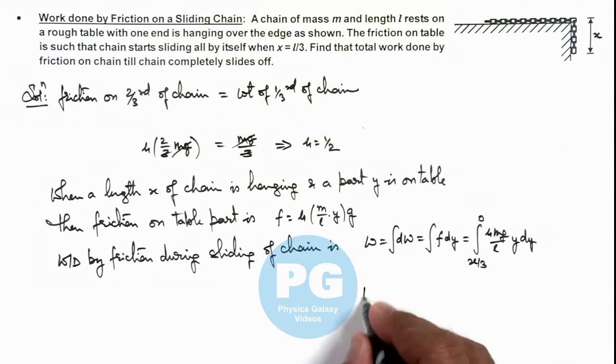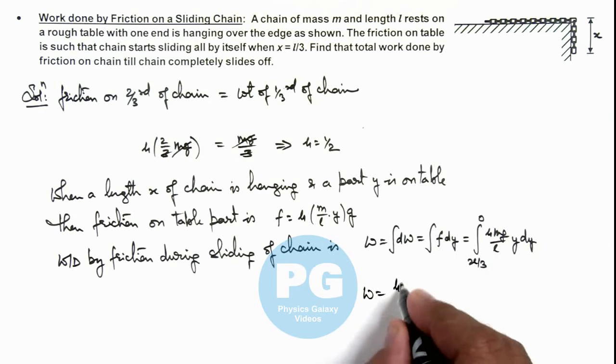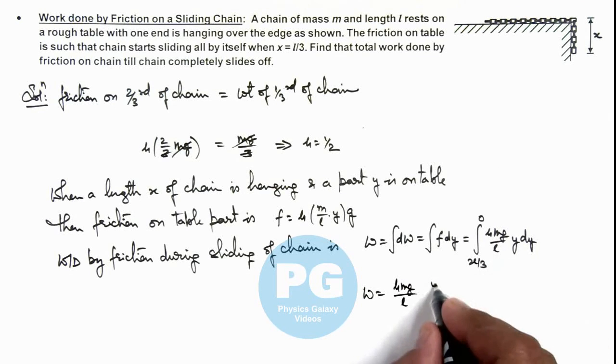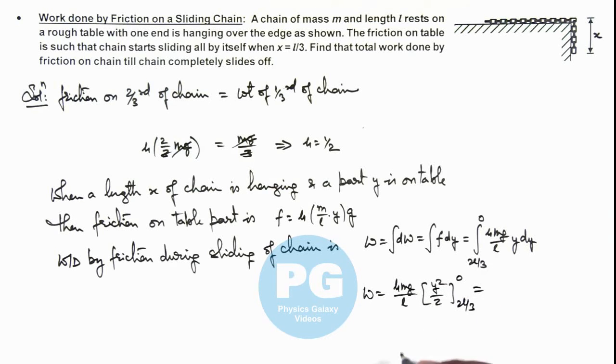So on integrating this will give us μmg/l multiplied by y squared by 2, and we substitute limits from 2l/3 to zero, and this will finally give us the value.